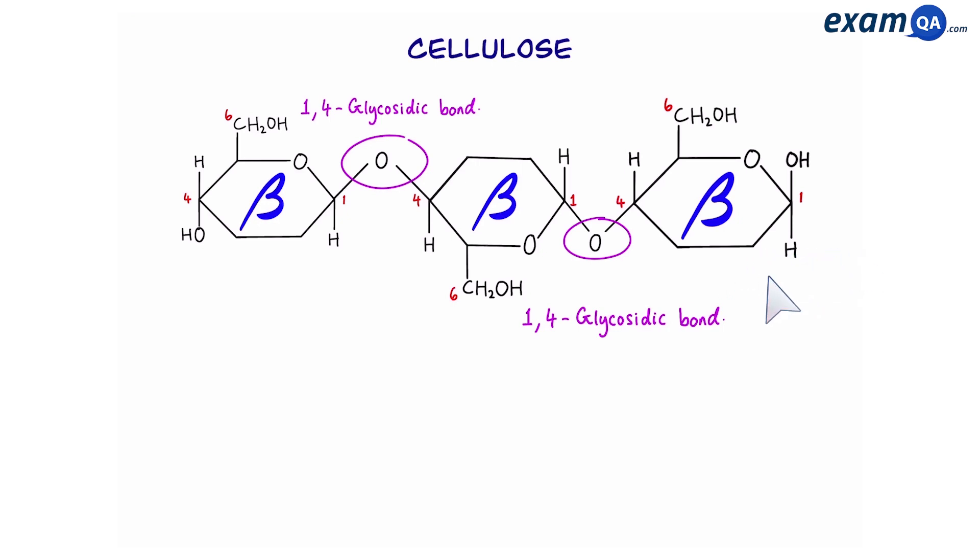So here's a demonstration. So here's the beta glucose, the second one has been inverted, and we formed a 1,4 glycosidic bond above. The third one is the same as the first one, back to normal, and you form a bond below. The fourth one will be the same as the second one, so inverted again. Again, bond above.